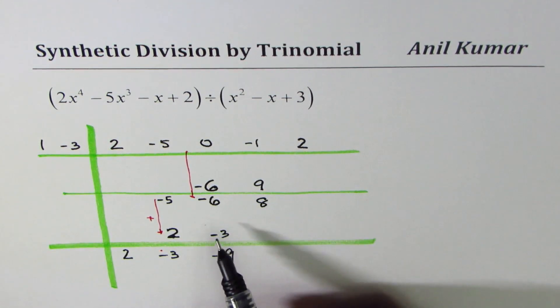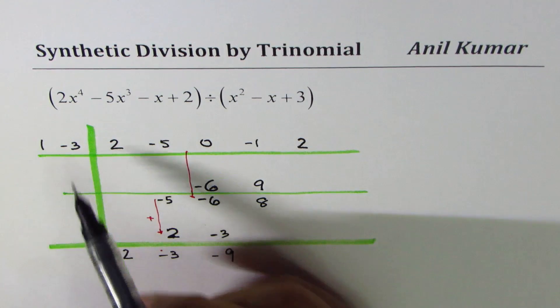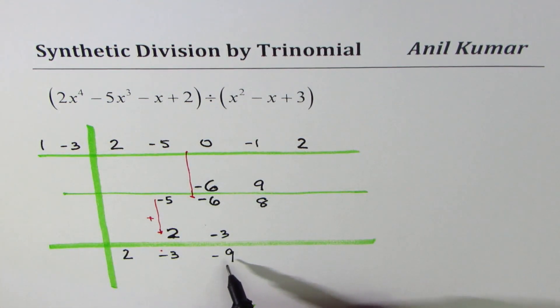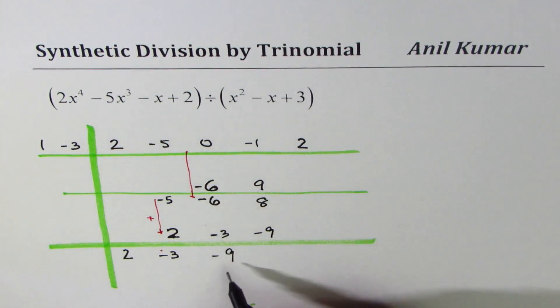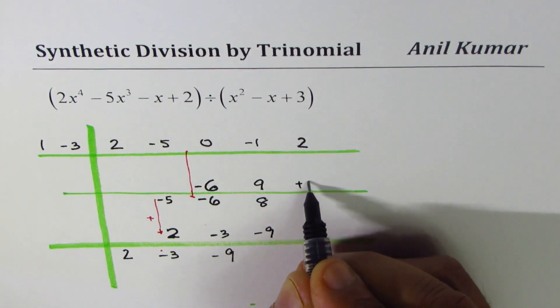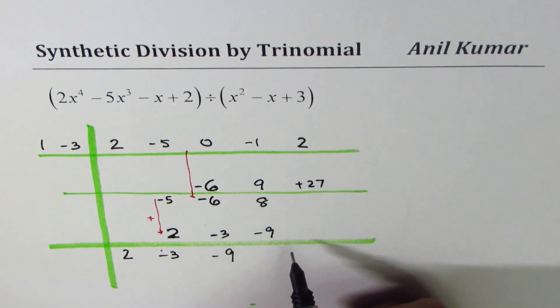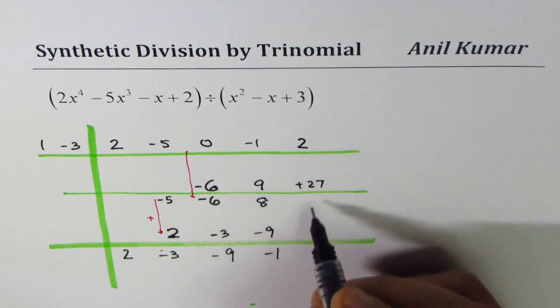At this stage, we'll again multiply 1 and minus 3 by minus 9. 1 times minus 9 is minus 9. Minus 3 times minus 9 is plus 27. When you add them up, you get minus 1 here and 29.